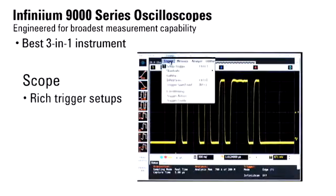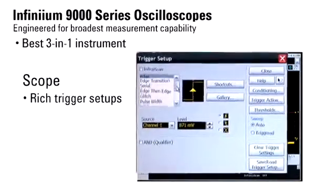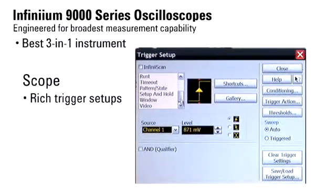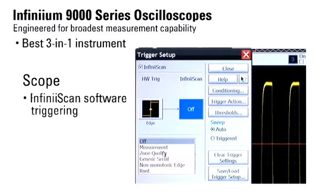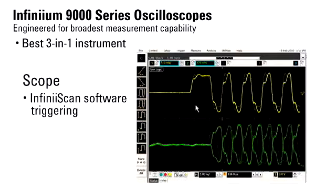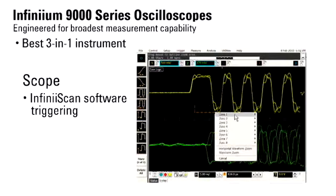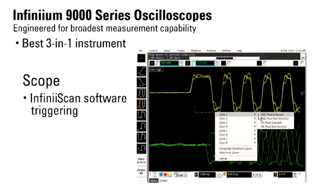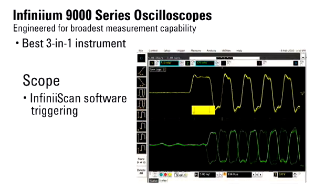A rich set of configurable trigger setups allows you to quickly zero in on the signals of interest. In addition to built-in hardware-based triggering, Infiniscan software triggering enables sophistication impossible for traditional scopes, like this quick zone-qualified trigger to separate DDR read and write cycles.